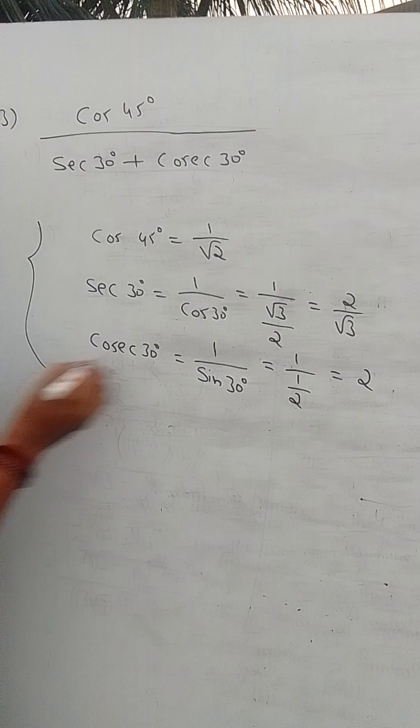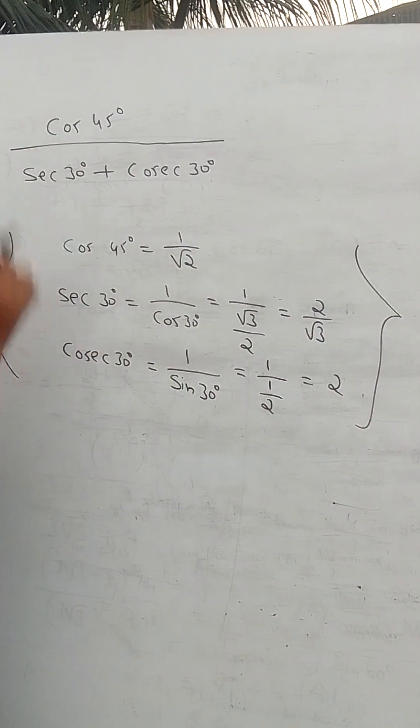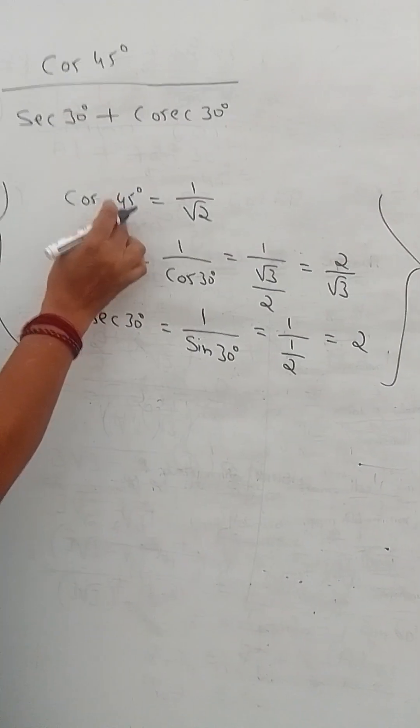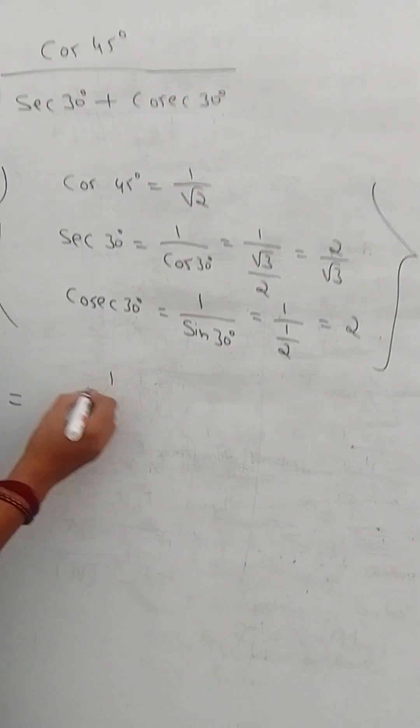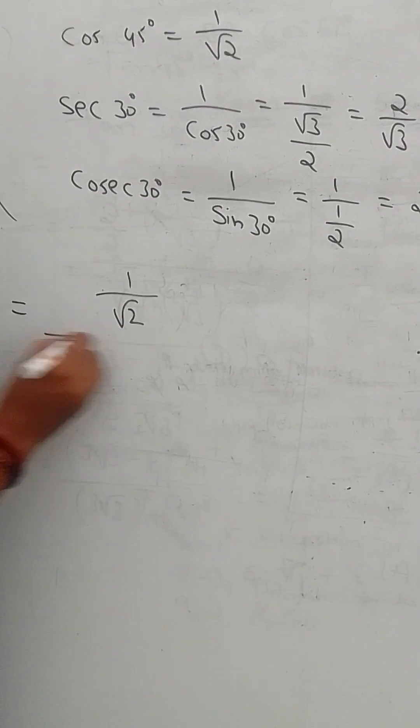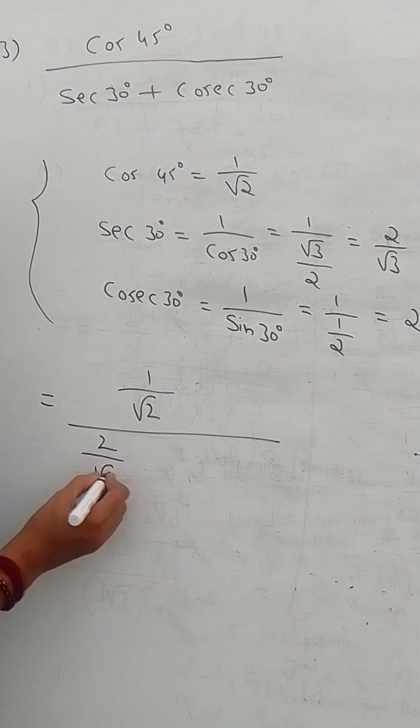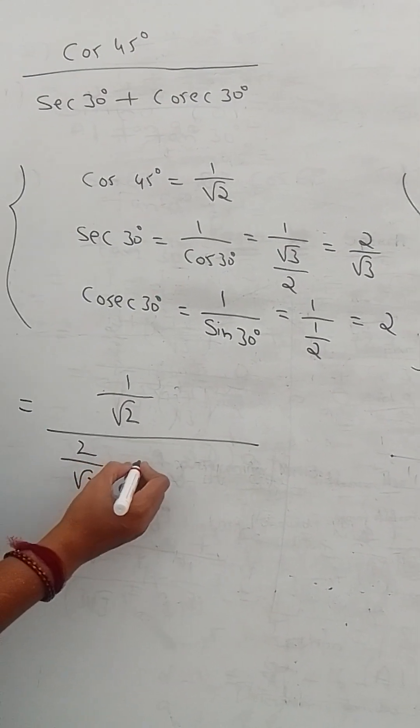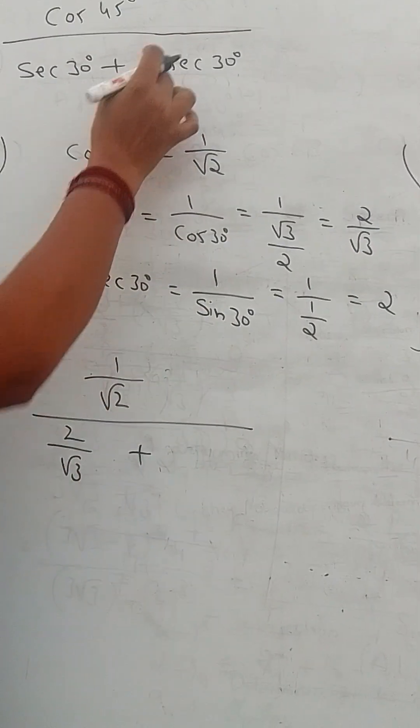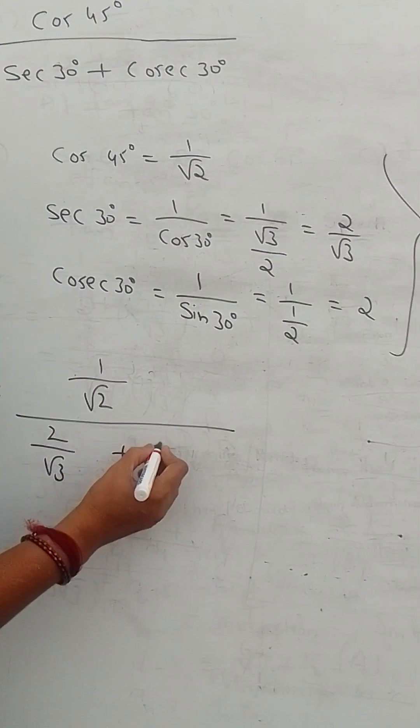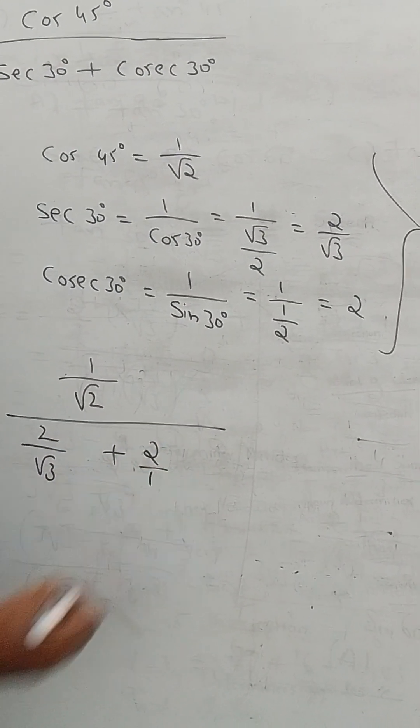Substitute these values in this equation. Then cos 45 is 1 by root 2, secant 30 is 2 by root 3, plus cosecant 30 is 2, that is 2 by 1.